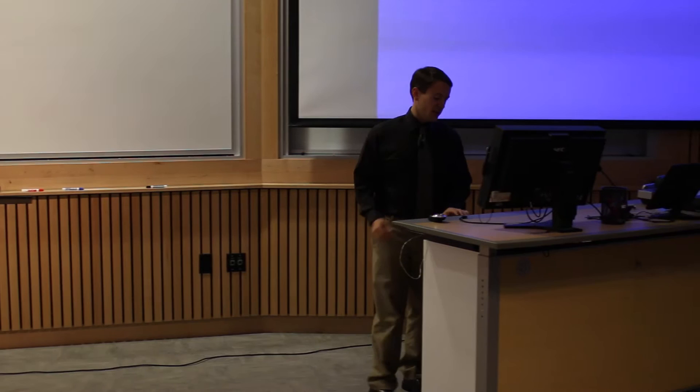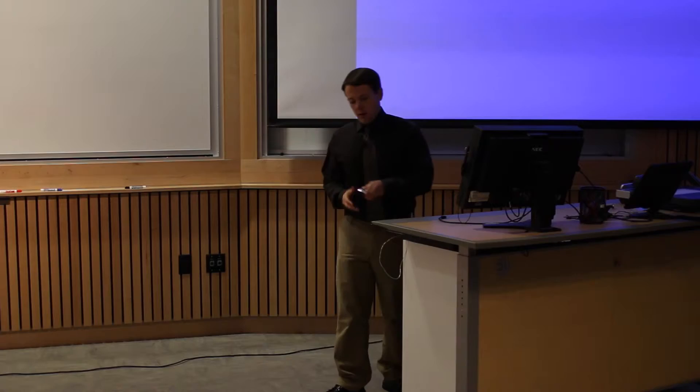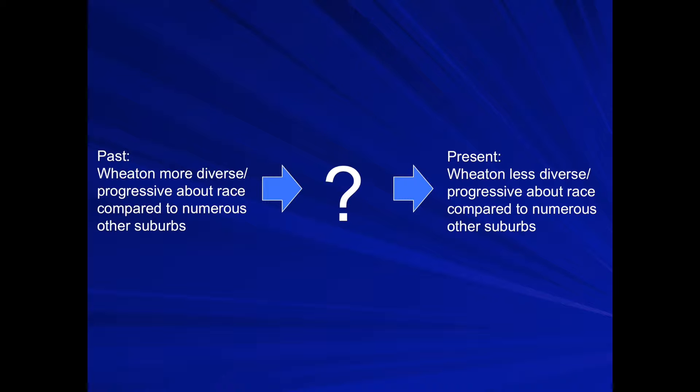Tonight I hope to help us think about what residential segregation — usually by race, when we're talking about this as sociologists — looks like in Wheaton and some nearby suburbs. My argument is that in the past, Wheaton as a suburb, compared to other Chicago suburbs in particular, was pretty progressive on issues of race. It was more diverse in its population and forward-thinking on some key issues.